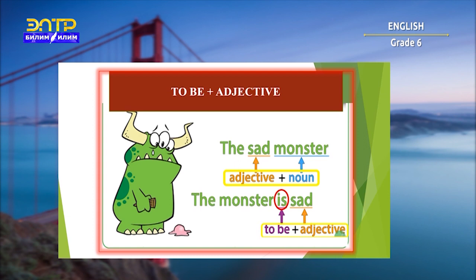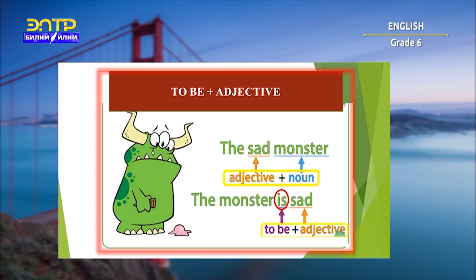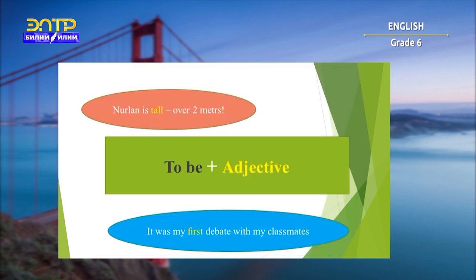We can also use the verb to be plus adjective. For example, look at the picture. Is the monster happy? No. The monster is sad. Sad is an adjective. Is is a form of the verb to be. After 'is' we put the adjective: is sad. We can say 'the sad monster' — adjective plus noun — not 'the monster sad.' Because the monster is sad — here we have the structure: to be plus adjective.